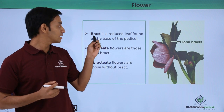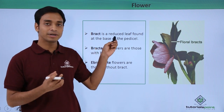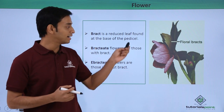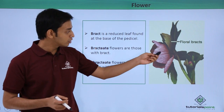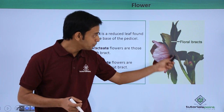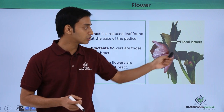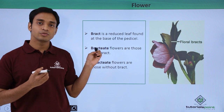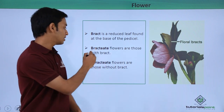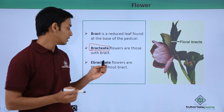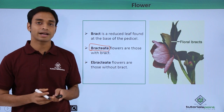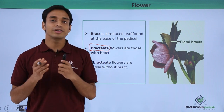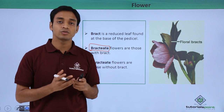There is a structure known as the bract, which is a reduced leaf-like structure present at the base of the pedicel or stalk of a flower. As you can see here, these leaf-like structures at the base are the bracts. Flowers which have bracts are known as bractate flowers, whereas flowers which do not have bracts are known as ebractate flowers.